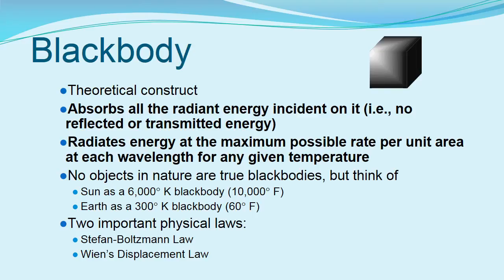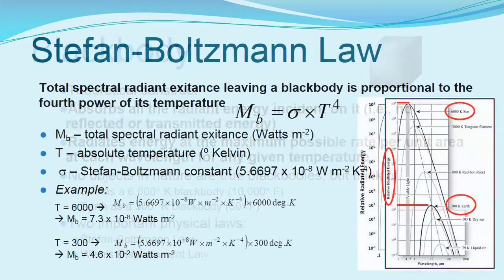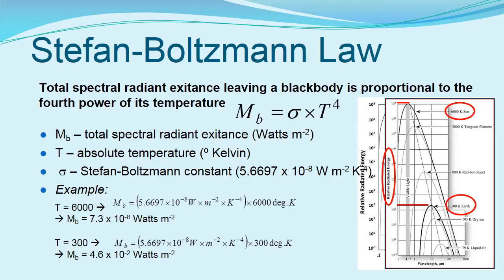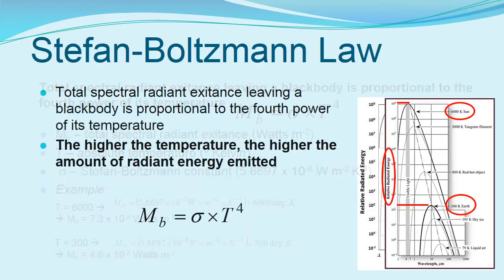Two radiation laws — the Stefan-Boltzmann law and Wien's displacement law — are used to quantify the amount of radiation exiting a body and its dominant wavelength. Energy emitted from a blackbody is proportional to the fourth power of its temperature. Actual energy emitted is computed based on a formula expressed in the Stefan-Boltzmann law. Using this equation, we can see mathematically that the energy of our 6,000 degree Kelvin sun far exceeds the energy emitted by our 300 degree Kelvin earth. Energy is described in watts per square meter, so we can see the scientific basis of the fact that hotter objects emit greater amounts of energy — very useful if we want to design sensors to detect and measure thermal radiation.